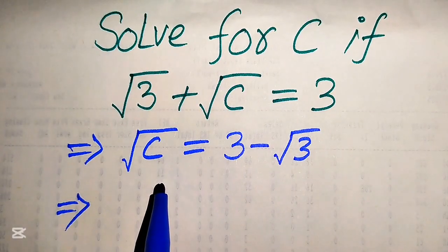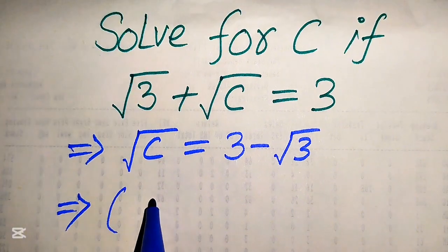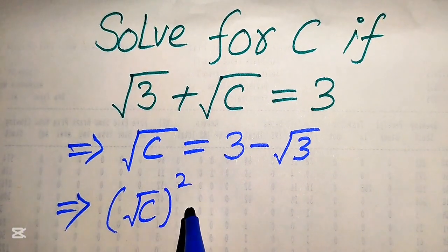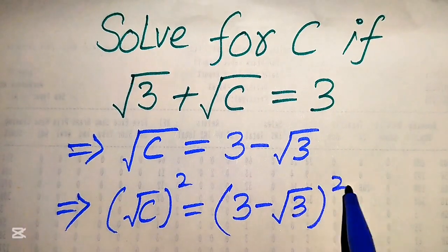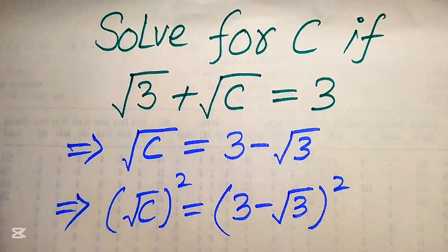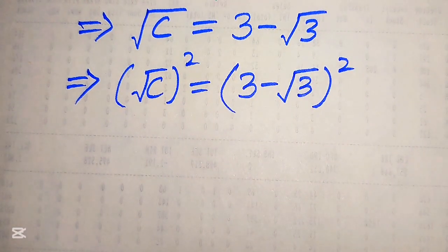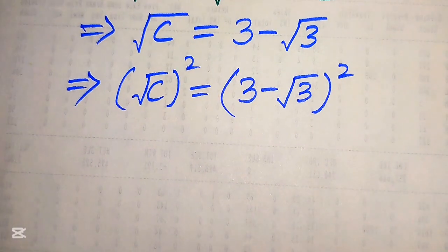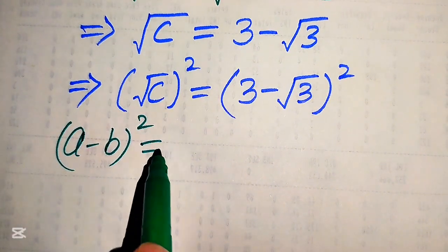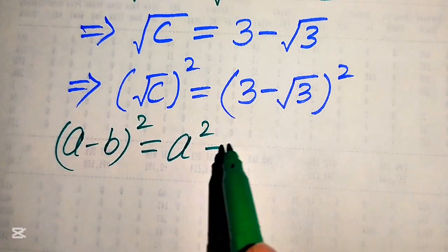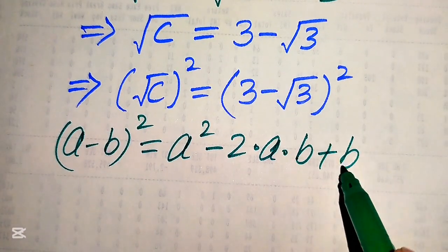So it will be written as square root of c equals 3 minus square root of 3. In the next step we square both sides in order to eliminate the square root sign. We will use the algebraic formula: (a minus b) whole square equals a squared minus 2ab plus b squared.